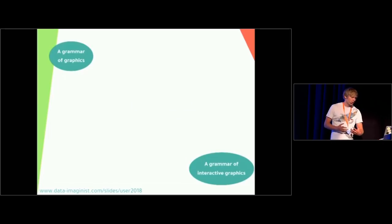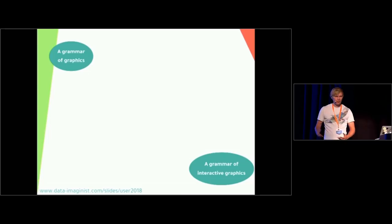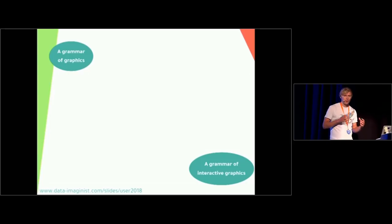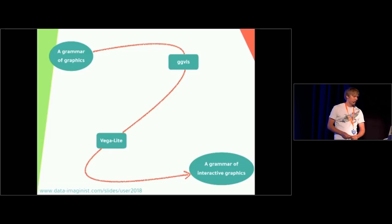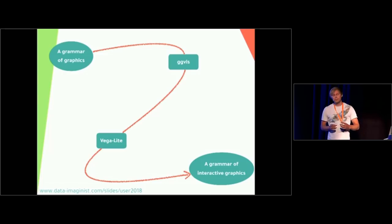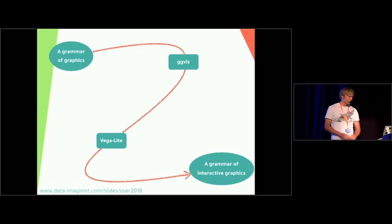The success of the grammar of graphics, as we know it from ggplot2, but also prevalent in other frameworks, has sparked a pursuit of a grammar of interactive graphics as the next step. Along this way there have been different frameworks with great results providing some sort of interactive grammar. But it can seem that our pursuit of a grammar of interactive graphics has prevented us from asking: where exactly are we going? We have this holy grail and we're running towards it, but we don't know precisely what it should be.